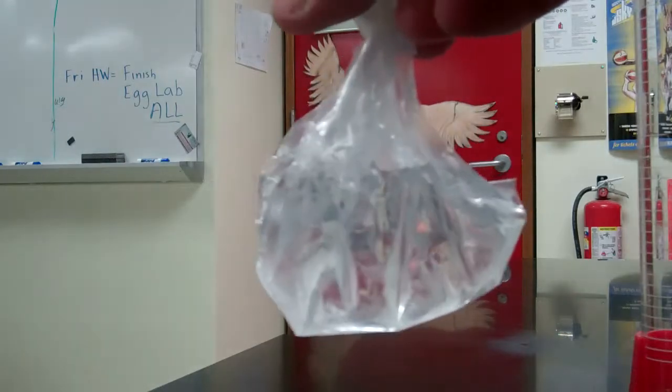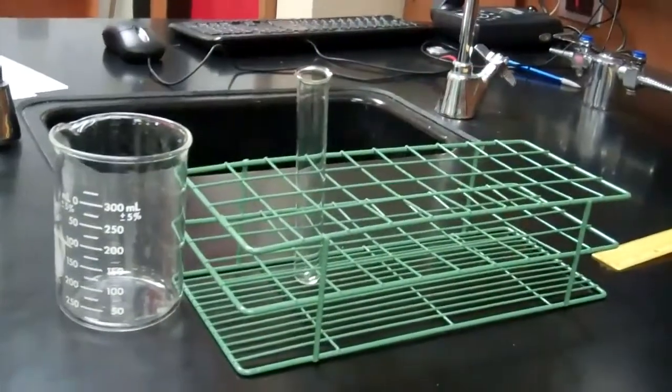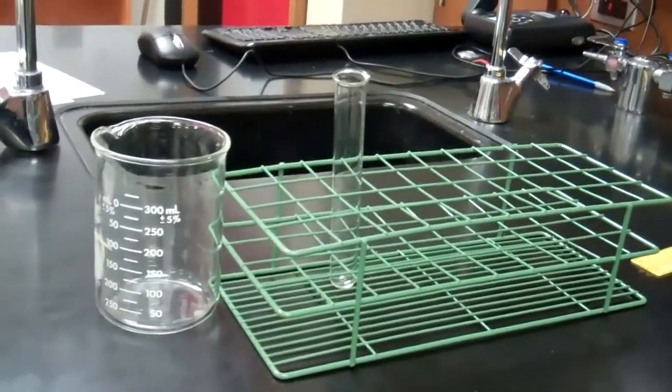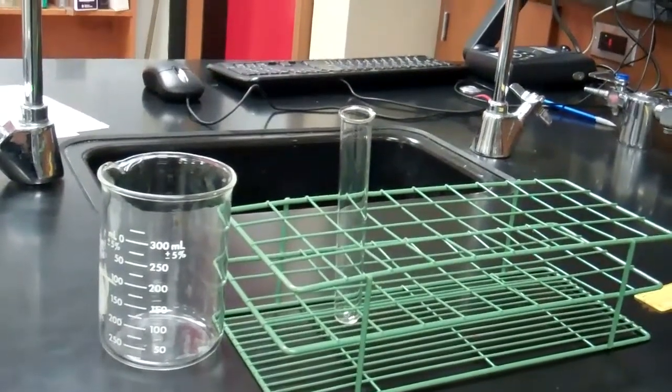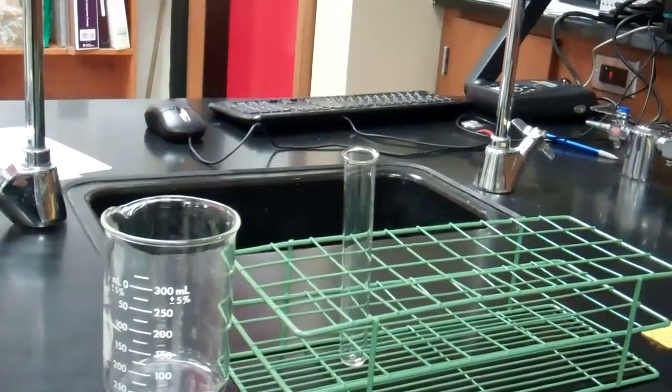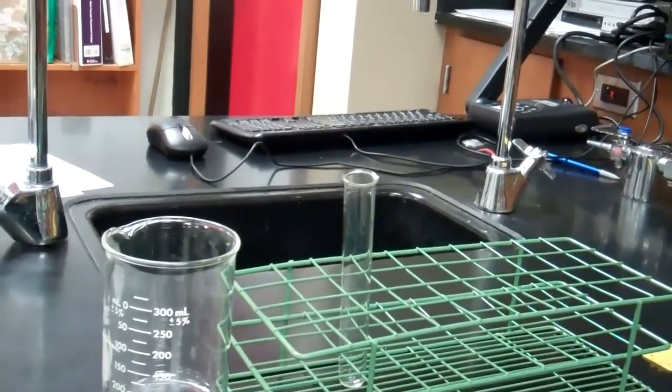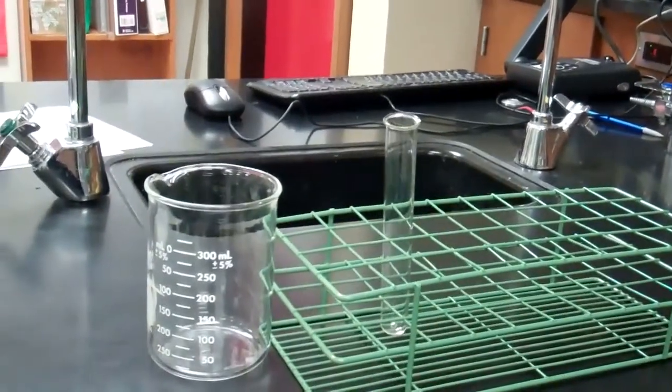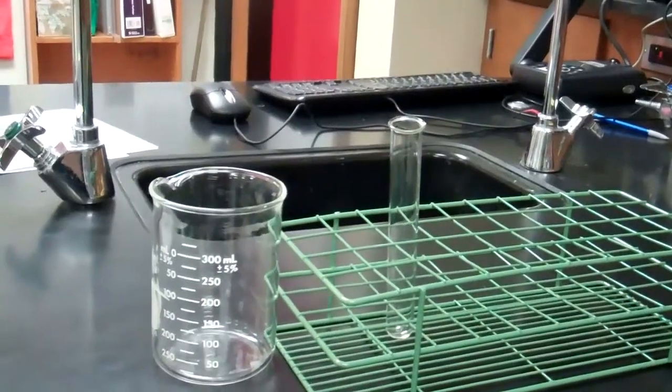So that's the starch person's job. The iodine person will need a beaker and a test tube, and you are going to measure some water, 20 milliliters, and some iodine, and you are going to put it in the beaker.